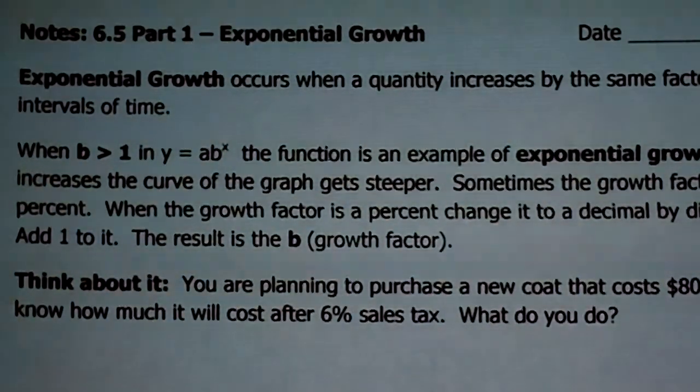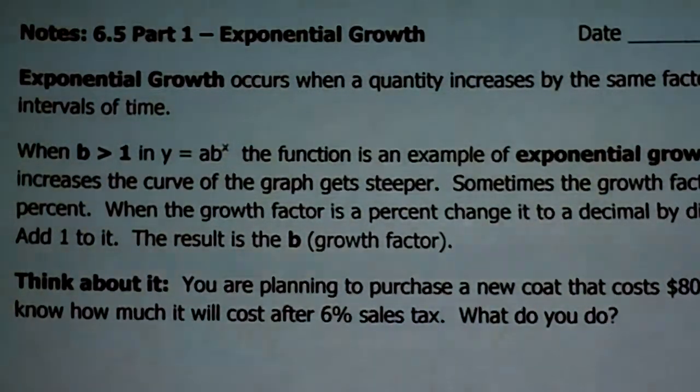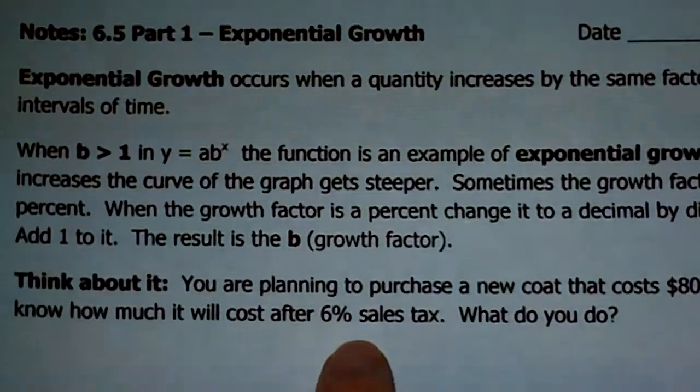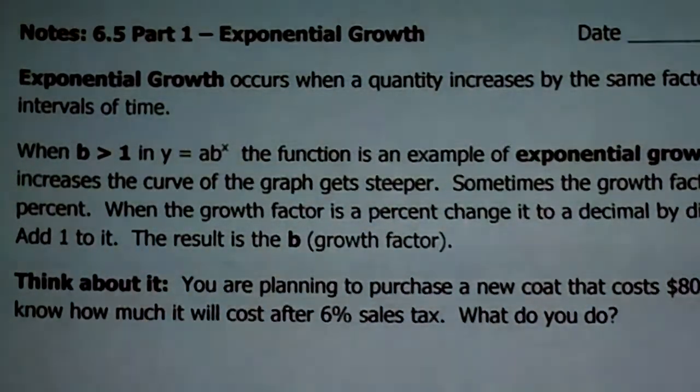Sometimes the growth factor is a percent. So that's how this is a little different than the 6-4 notes. You're going to be given the growth factor as a percent. When the growth factor is a percent, you're going to change it to a decimal by dividing it by 100, because that's how you change percents to decimals, right? Then we're going to add a 1 to it, and the result is b. So you might be thinking, well, I thought I just had to look for the multiplier. Why is this all switching up?